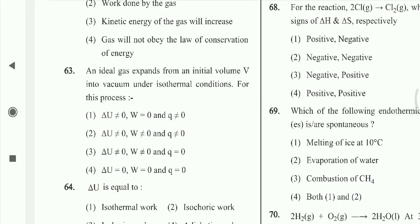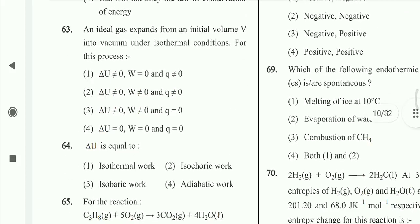Question 63: An ideal gas expands from an initial volume V into vacuum under isothermal conditions. For this process — which is known as free expansion — delta U = 0, W = 0, and Q = 0.